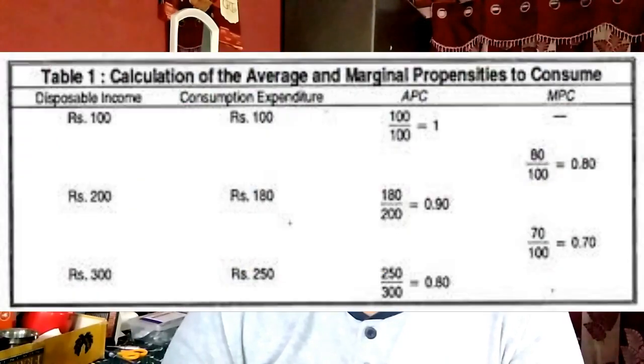What is APC and how is it calculated? Average propensity to consume is calculated by dividing total consumption by total income. It is the ratio between what is spent and what is earned.